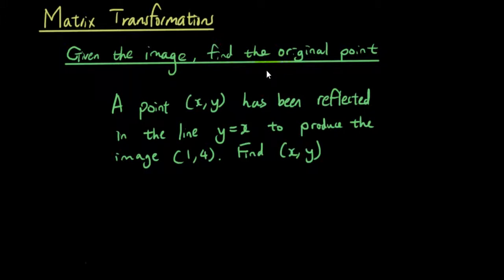All of the other matrix transformations tutorials we have done are ones where you get an original point and you are asked to find an image based on a transformation. This time we give you the image and we ask you to find what the original point was. So how do you do that?